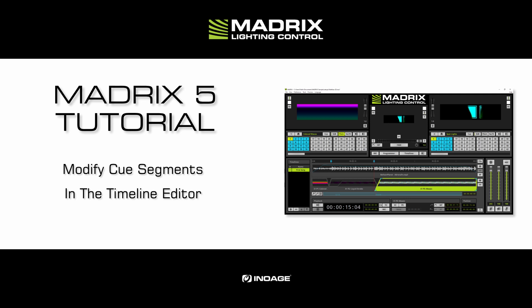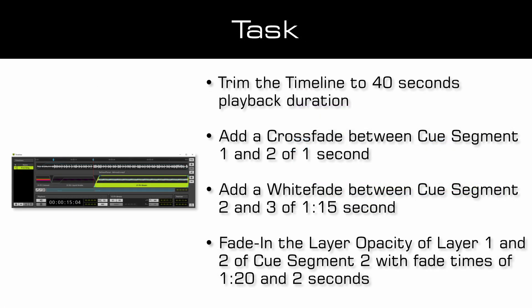We will work in this tutorial with the results of the tutorial 'Modify an audio file in the timeline editor'. As tasks, we have to: trim the timeline to 40 seconds playback duration, add a crossfade between cue segment one and two of one second, add a white fade between cue segment two and three of one second 50 frames, and create a fade in of the layer opacity of layer one and two for cue segment two — with a fade time of one second 20 frames for layer one, and two seconds for layer two.